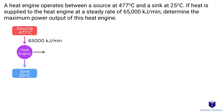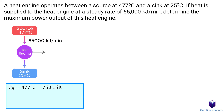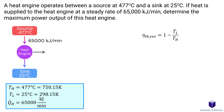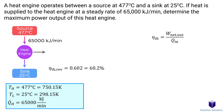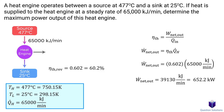In the second problem, we have a heat engine with heat supplied at a steady rate and need to find the maximum power output. The source temperature is 477 degrees Celsius, the sink temperature is 25 degrees Celsius, and heat is supplied at 65,000 kilojoules per minute. We find the Carnot efficiency using TH and TL, then rearrange the efficiency equation in time-rate form — W-dot equals η times Q-dot-in — plugging in the values to solve for the maximum power output.